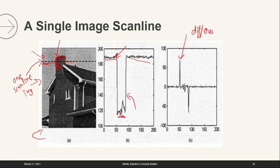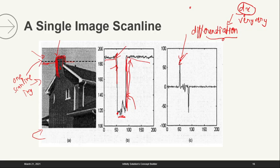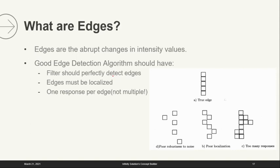A finite differentiation — note that in differentiation dx is a very infinitesimally small element we take. Because of this we get peaks where intensity is drastically changing — falling, then rising. We can say those peaks should be the edges. So edges are nothing but the abrupt changes in intensity values.